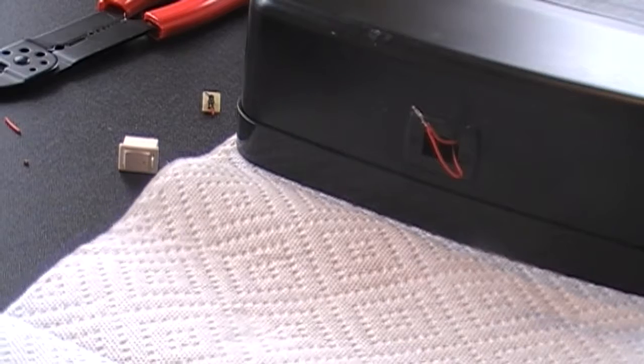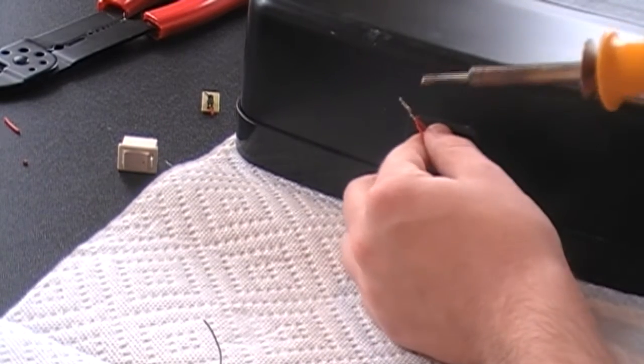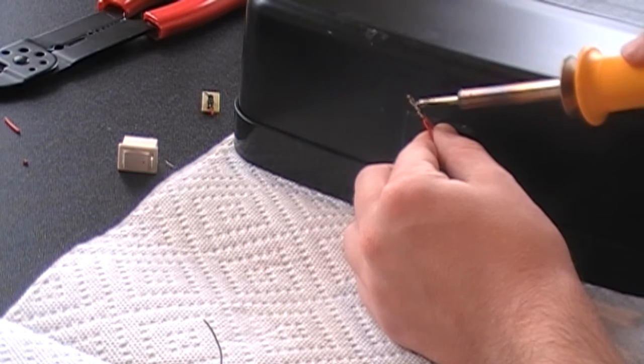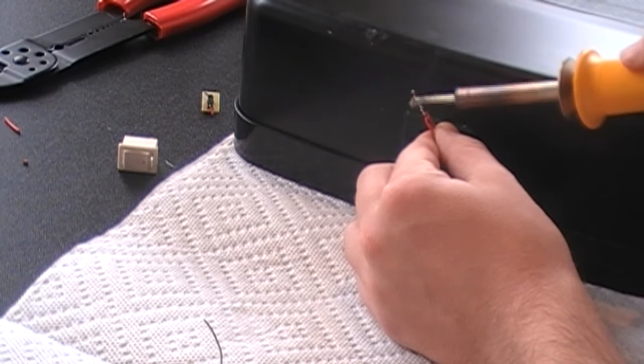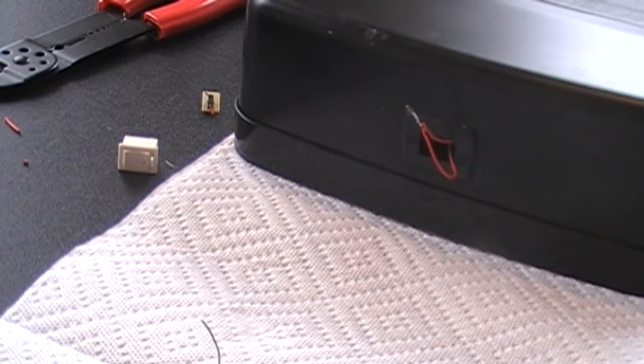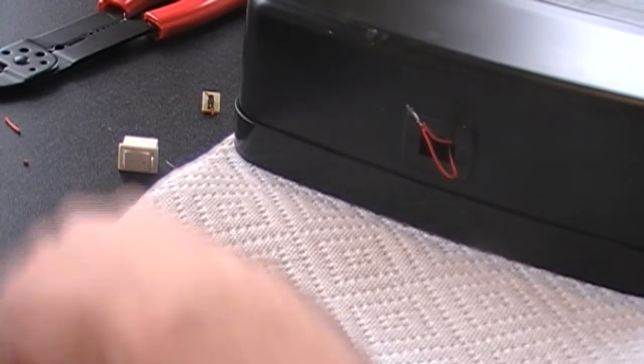And from here, there should be enough solder on there already that all I have to do is just touch the soldering iron to it. And they should just, the solder should all melt together. And there it is. There's a nicely soldered together wire. And as you can see, it now works. But there's a nice little close-up of the solder. Not a particularly bad job. Not a particularly good job either, but that's how it's done.